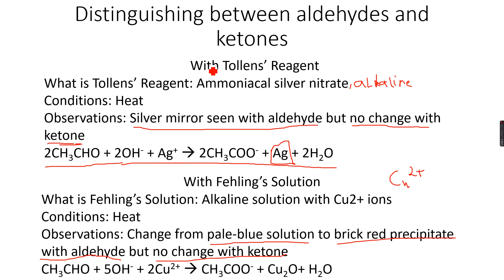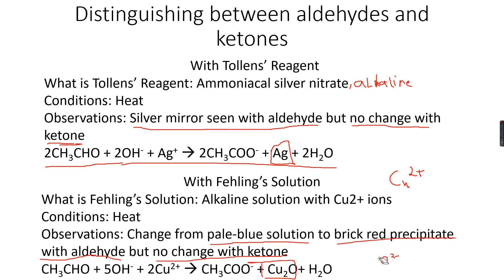Ketones have no reaction with both Tollens reagent and Fehling's solution, but aldehydes react with both. This is again because the aldehyde gets oxidized to the carboxylate ion. You see a brick red precipitate because the Cu2+ is reduced to Cu2O - copper(I) oxide - which is the Cu+ ion bonded with O2- ions. This observation and reaction are very important and you should learn all of this.